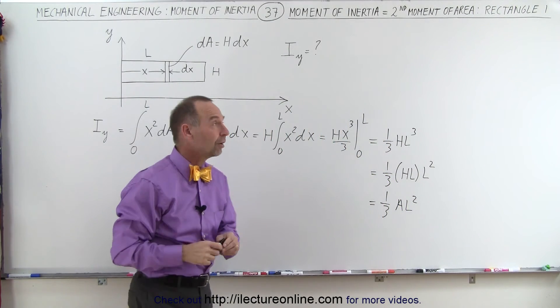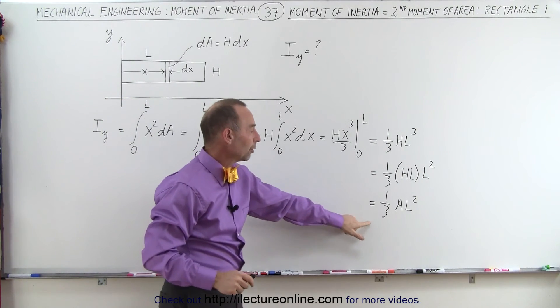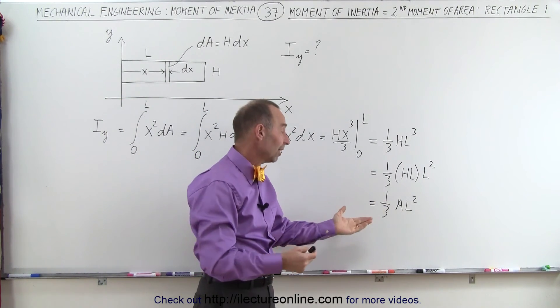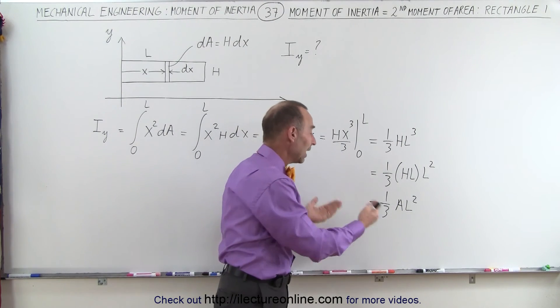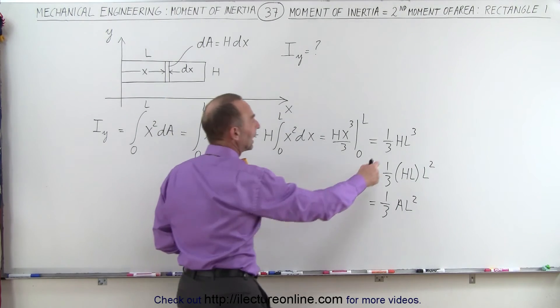Now, when you find the moment of inertia of an object like this that has mass, the moment of inertia would be one-third the mass times L squared. So in this case, instead of using the mass, we use the area, so it becomes one-third A L squared, or one-third h L cubed.